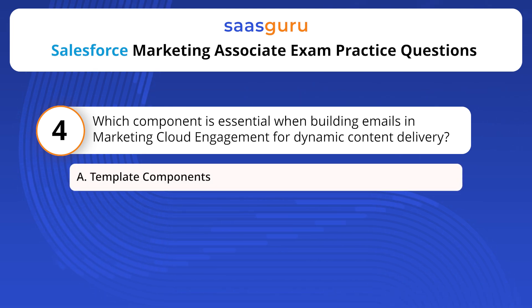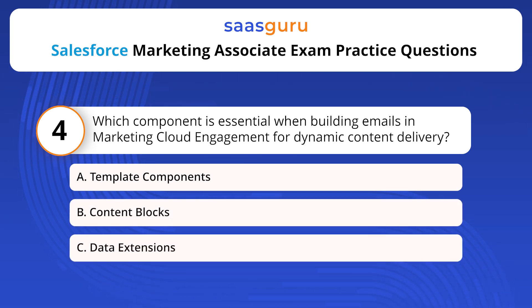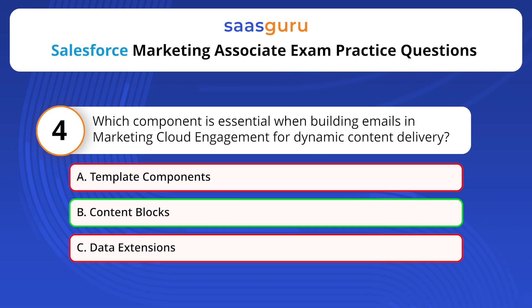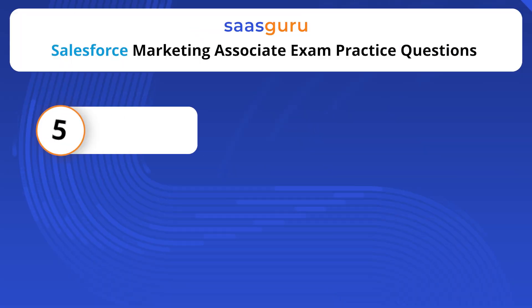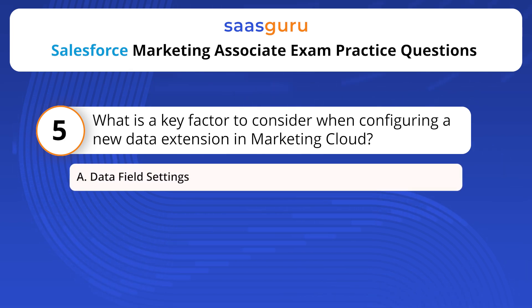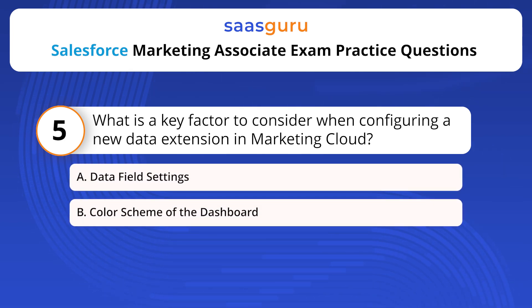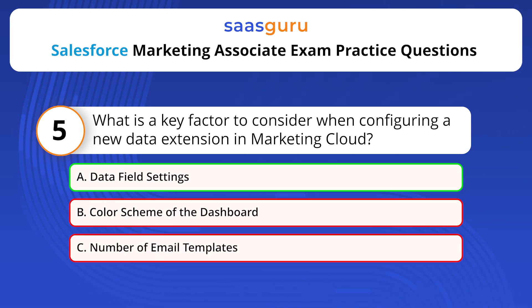Which component is essential when building emails in Marketing Cloud Engagement for dynamic content delivery? Options: Template Components, Content Blocks, Data Extensions. The answer is option B — Content Blocks. Content Blocks are used for creating dynamic and personalized content in emails within Marketing Cloud Engagement. What is a key factor to consider when configuring a new data extension in Marketing Cloud? Options: Data field settings, Color scheme of the dashboard, Number of email templates. The answer is option A.